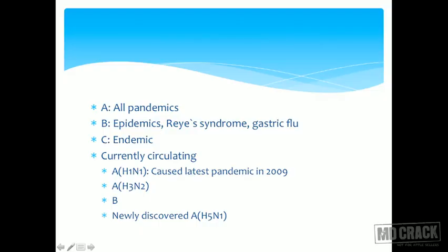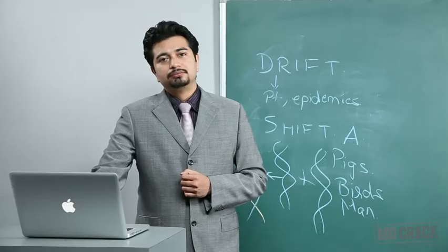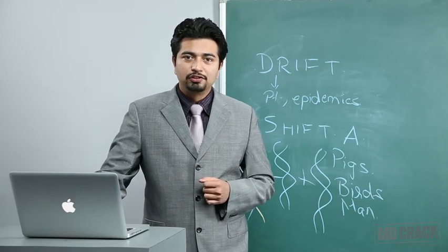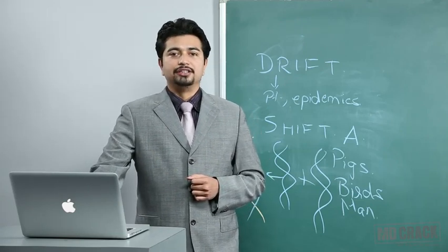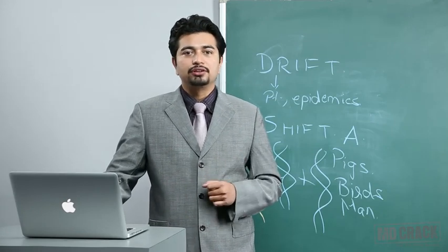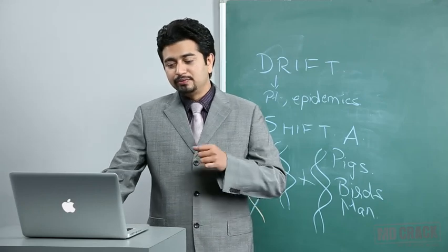Regarding currently circulating viruses, we have H1N1, H3N2, influenza B, and the newly discovered H5N1. H5N1 made global headlines very recently. As far as H1N1 is concerned, the latest pandemic of influenza is of the A variety, so H1N1 is the latest virus which has caused a global pandemic.